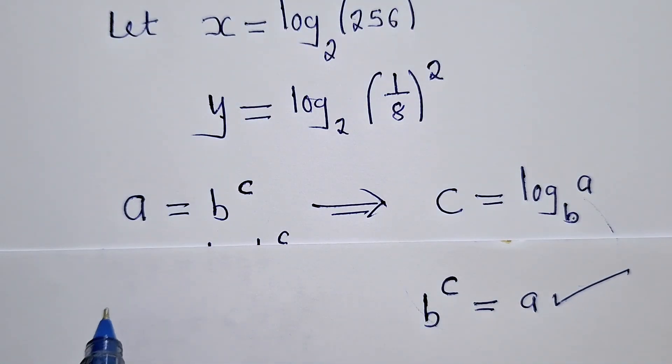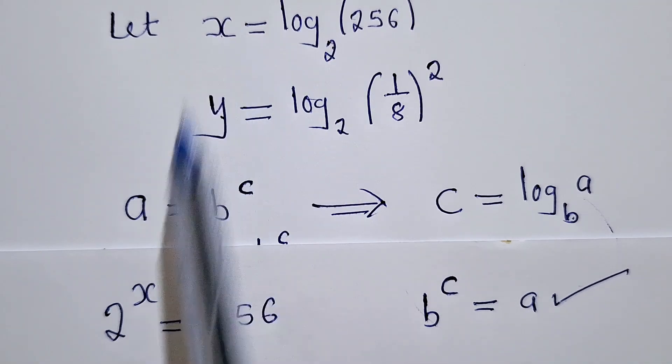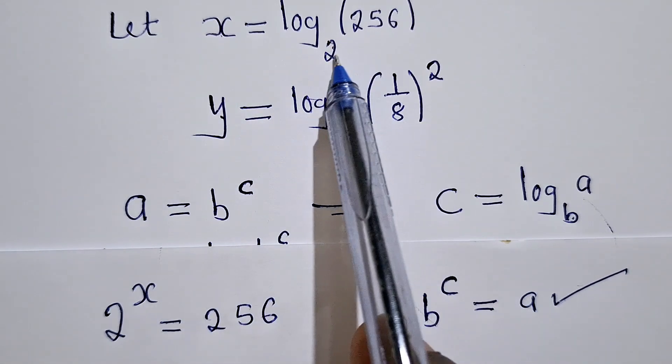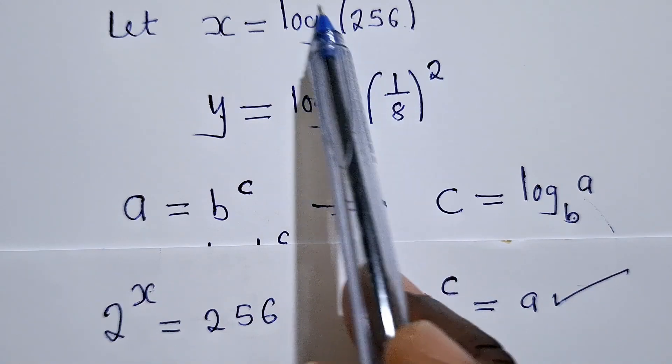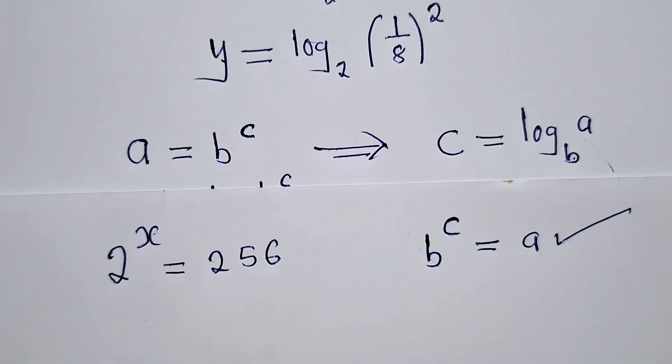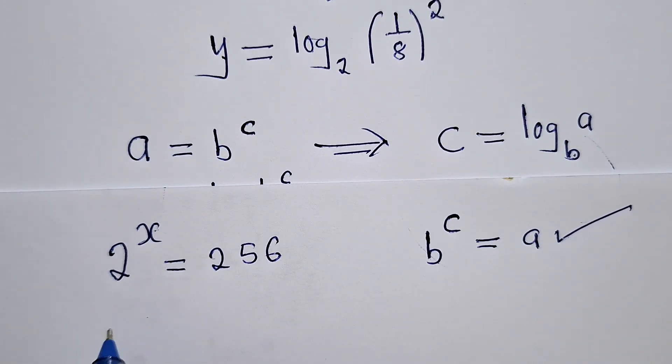So it will be 2 power x is equal to 256. So this 2 will push the x like we did here. So it will be 2 power x is equal to 256. The log would disappear. We now solve for x. 2 power x will be equal to 2 power 8. The laws of indices.